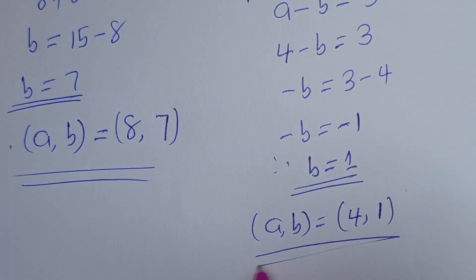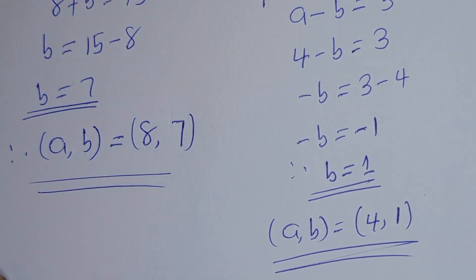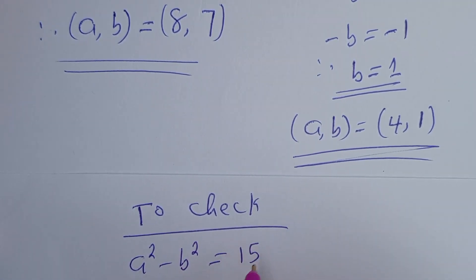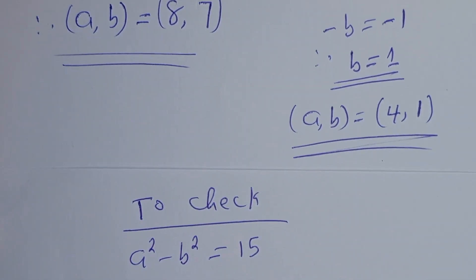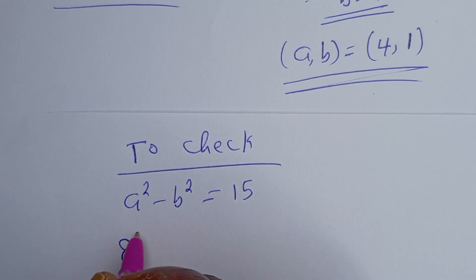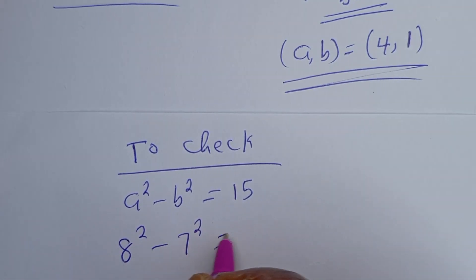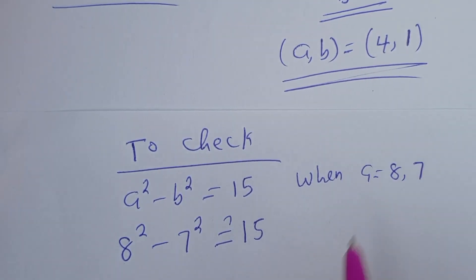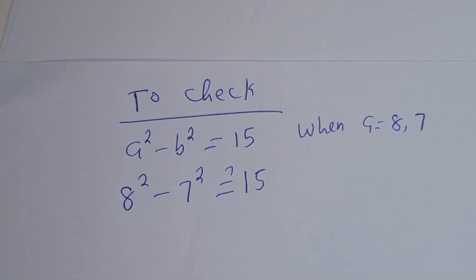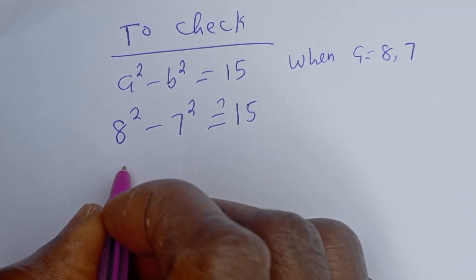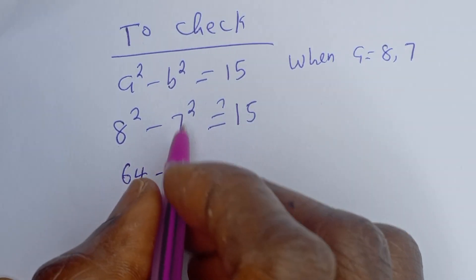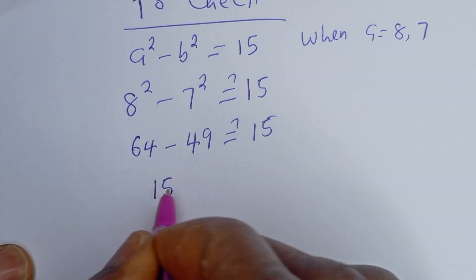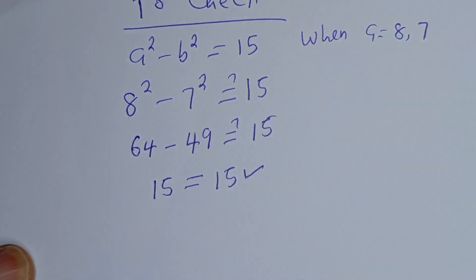This is the value of b, and (a, b) = (4, 1). Let's check to confirm if the answers are correct. From the given equation, a² - b² = 15. When a = 8 and b = 7, we have 8² - 7² = 64 - 49 = 15. So 15 = 15, which is true.